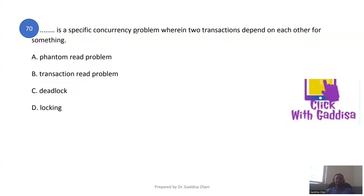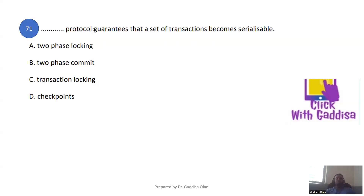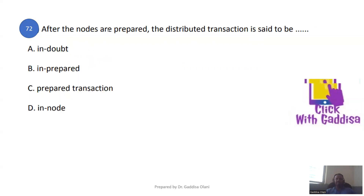Deadlock is a specific concurrency problem where two transactions depend on each other. The two-phase locking protocol guarantees that a set of transactions becomes serializable. After all nodes are prepared, the distributed transaction is said to be in a prepared state.